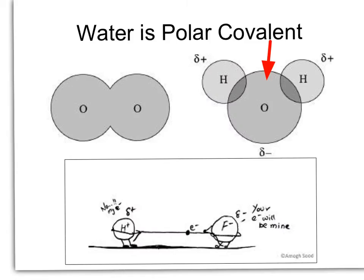Recall that water is a polar molecule. The covalent bonding between the hydrogen and the oxygen forms a polar molecule because oxygen has a slightly higher electronegativity than hydrogen, so it wins the tug of war between the two atoms. This electronegativity tug of war occurs between hydrogen and fluorine, hydrogen and oxygen, and hydrogen and nitrogen.